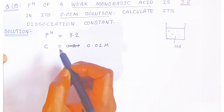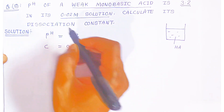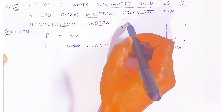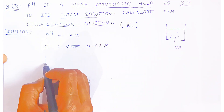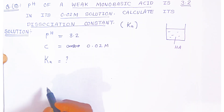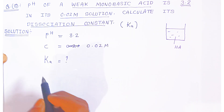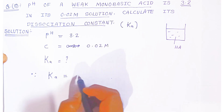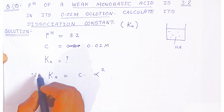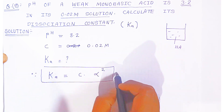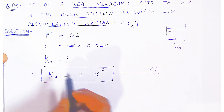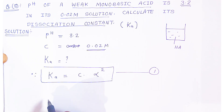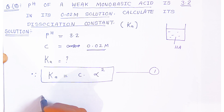We have to calculate the dissociation constant. Since it is an acid, we call it Ka. The formula for the dissociation constant of a monobasic acid is Ka = C·α², where C is concentration and α is the degree of dissociation. Concentration is given as 0.02 molar, so we need to calculate alpha.